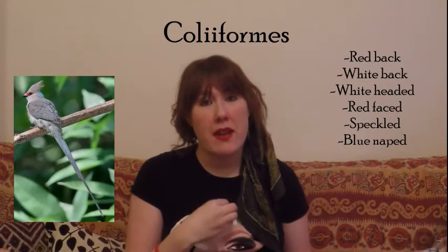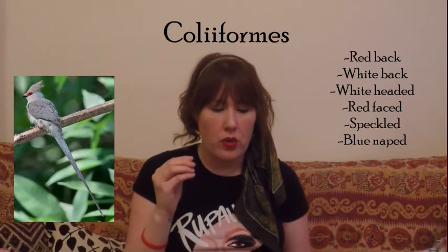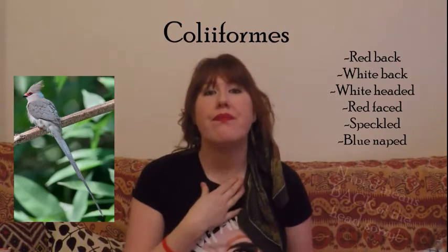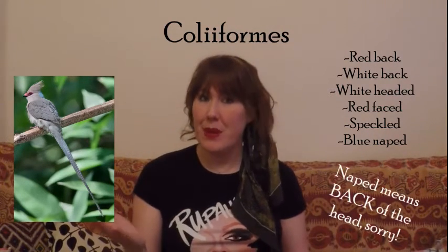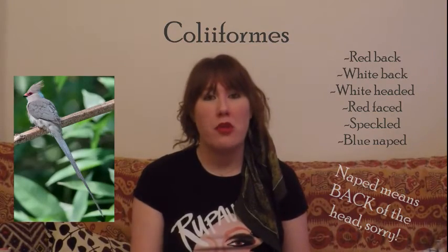There are only six families in the next order — Coliiformes — and these are sometimes called mousebirds, because of the way they move: they kind of scurry. I remember Coliiformes by cauliflower — nice and easy. The six species under this category are red-backed, white-backed, white-headed, red-faced, speckled, and blue-naped mousebirds.